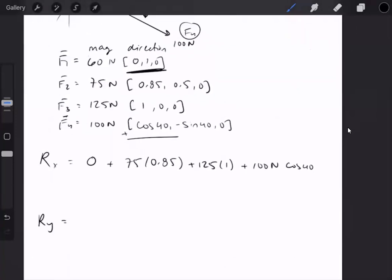For our y component, adding all of these together will be 60 newtons plus 75 times 0.5 plus 0 plus 100 times negative sine of 40.